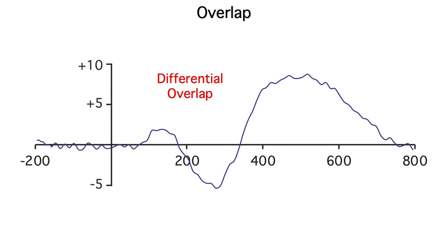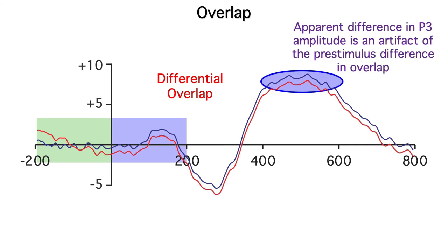One condition has very little overlap from the previous trial. The other is identical, except that it contains overlapping activity that distorts the baseline, which causes the whole waveform to be shifted downward by the baseline correction process. You can see the overlap here, and you can see that the entire waveform is shifted downwards starting right after time zero. This causes an apparent difference between conditions in P3 amplitude, but this difference is actually an artifact of the differential overlap.